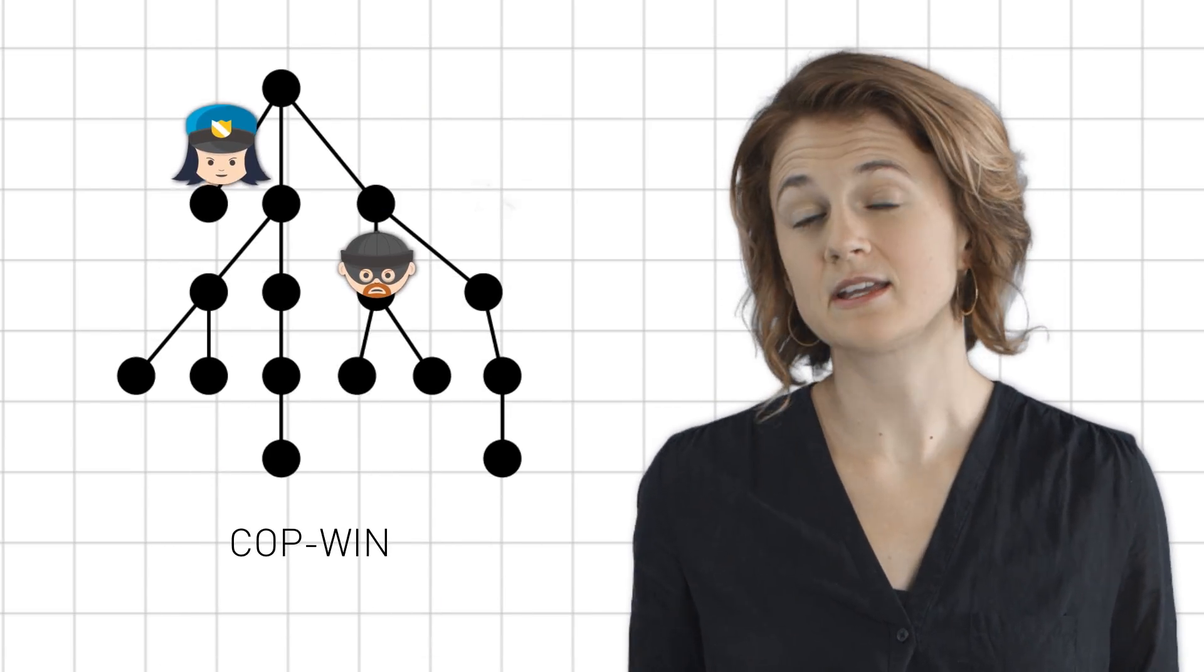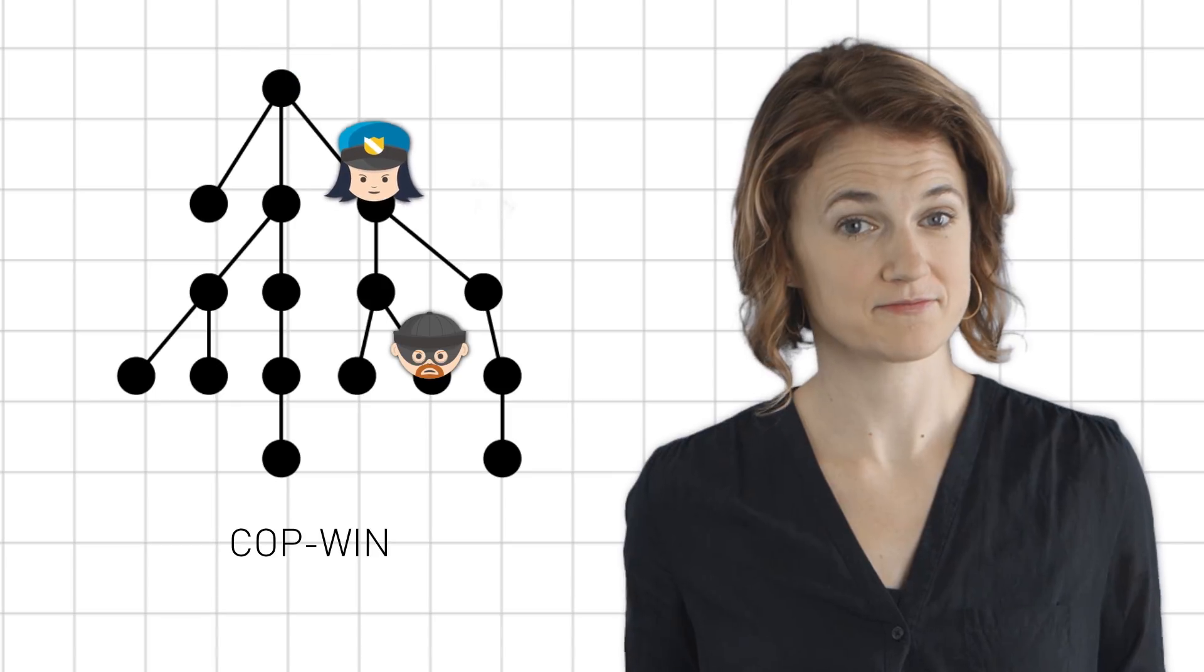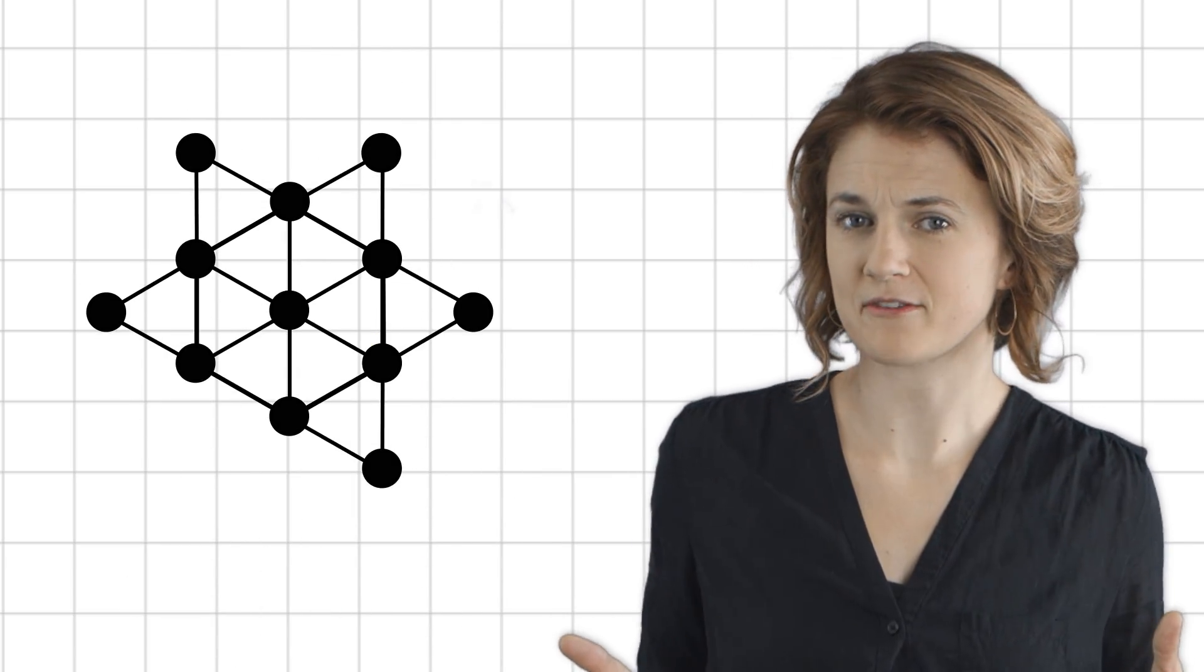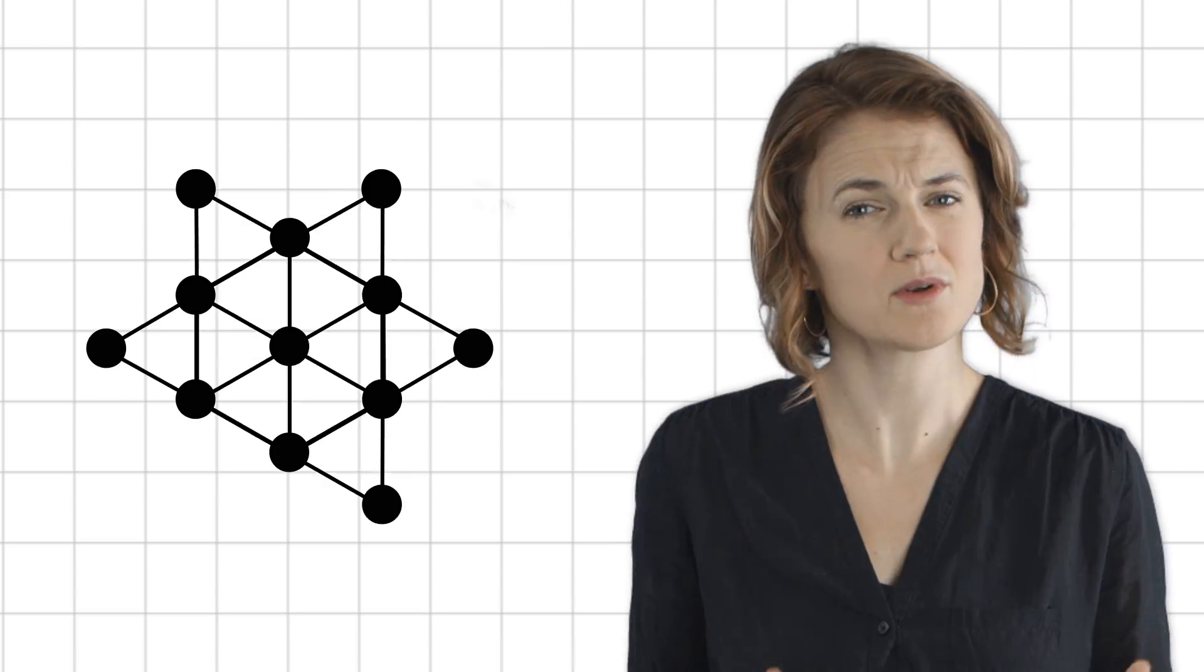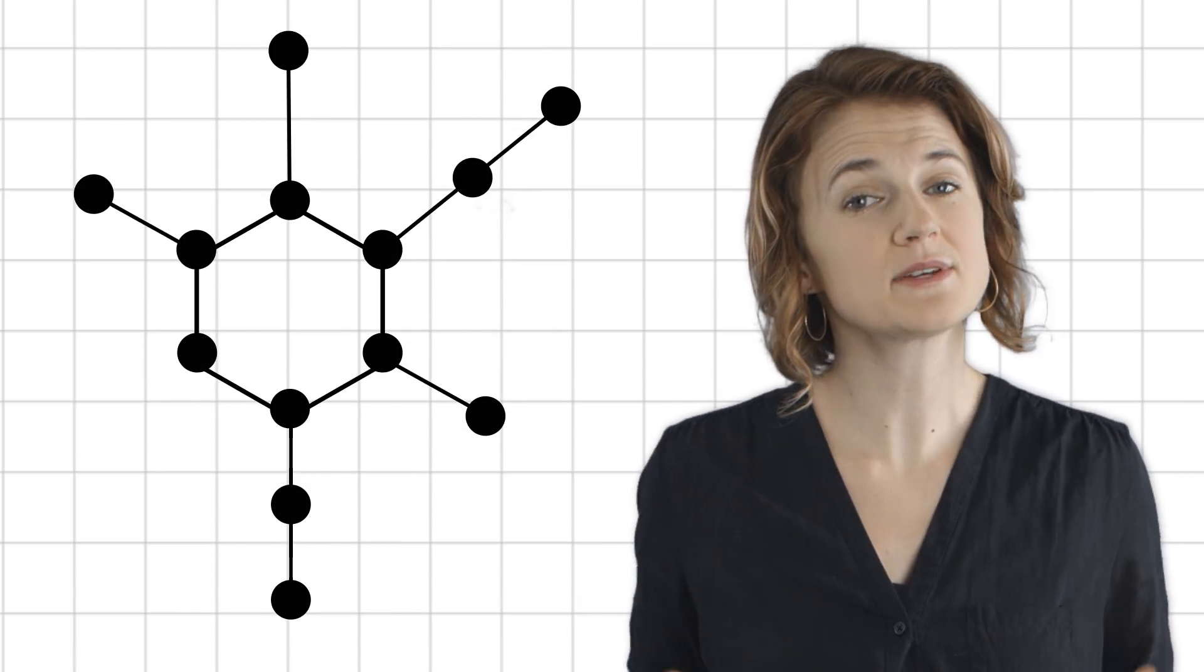Finally, any tree is also a cop-win graph. But what about this graph? Is it a cop-win or robber-win? Or this graph? It's not always easy to tell.